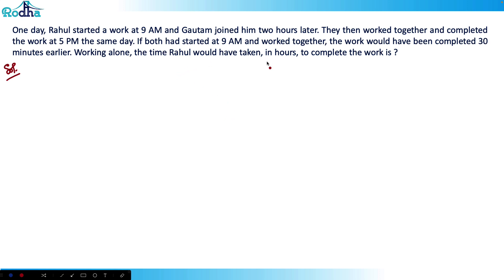This is a good question from CAT 2021 Slot 3. We'll do this question by ratio method — no equations. Understand this: one day Rahul started work at 9am and Gotham joined him two hours later. They worked together and completed the work at 5pm the same day.